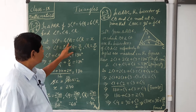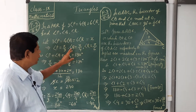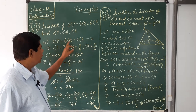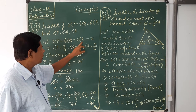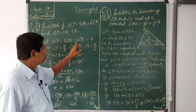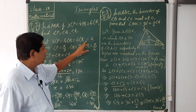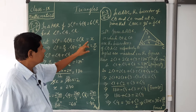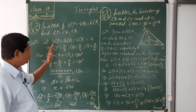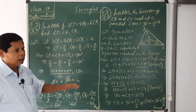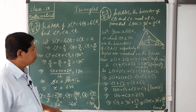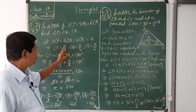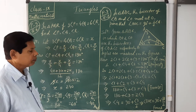Likewise, 4Q = x, so angle Q = x by 4, and 6R = x, therefore angle R = x by 6. So P, Q, R are all represented in terms of a single variable x.